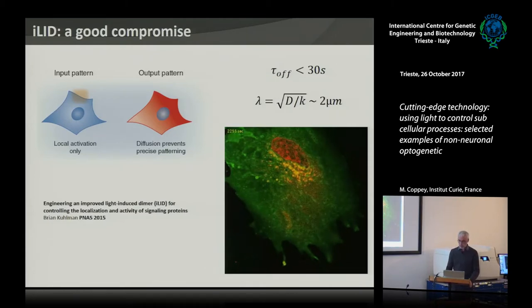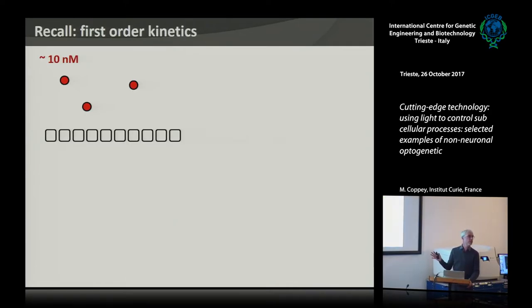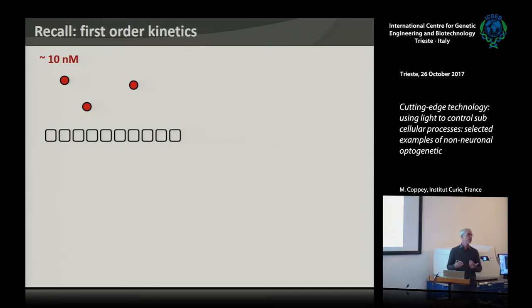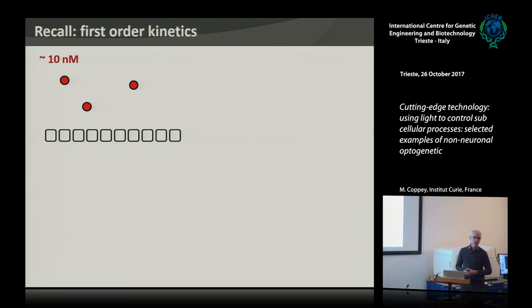Something I want to discuss is the chemistry behind these systems. Usually when people use these dimerizers, a common problem is: you go to the microscope, try to recruit to the plasma membrane, do an image, activate, do another image — nothing happens. In general, this will always be related to the expression level of your set of proteins. That's maybe the only thing you should be aware of when working with dimerizers — it's a matter of the equilibrium.